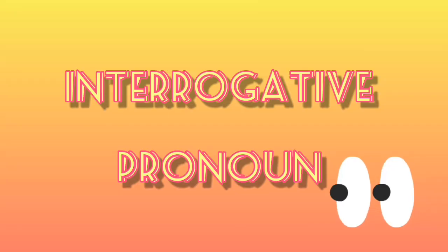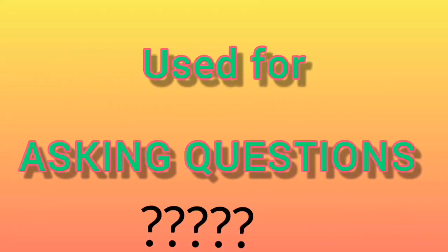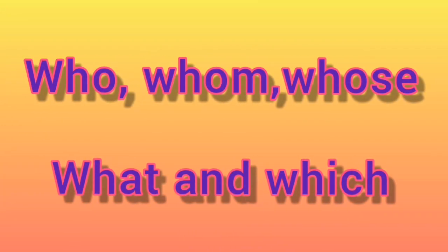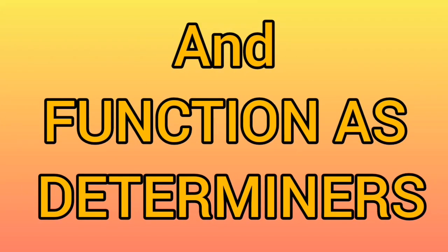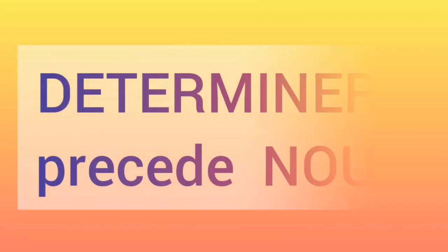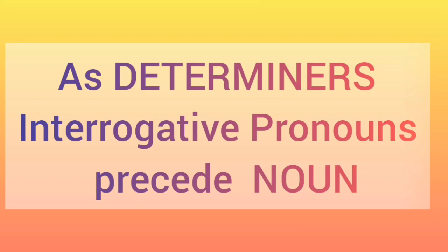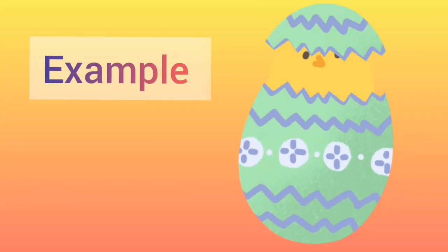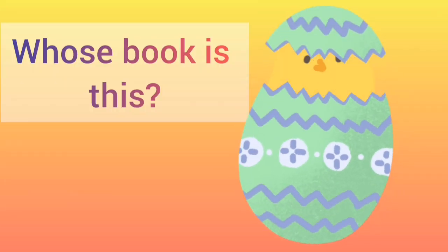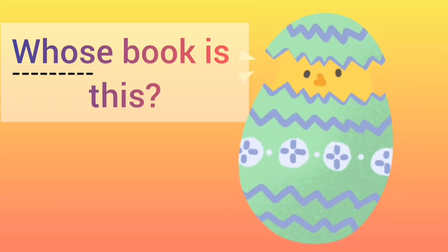So without wasting any time, let's continue. Interrogative pronouns — we use interrogative pronouns to ask questions. When used as pronouns for asking questions, who, whom, whose, what, and which are called interrogative pronouns. These interrogatives may also function as determiners. As determiners, they precede the noun. For example, 'Whose book is this?' — here the interrogative pronoun 'whose' precedes the noun 'book' as a determiner.